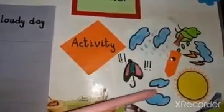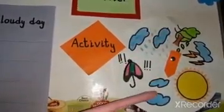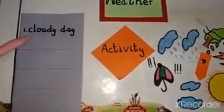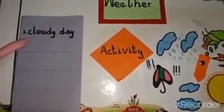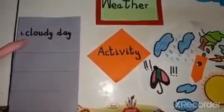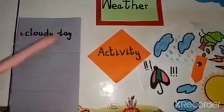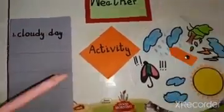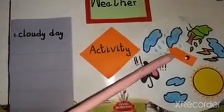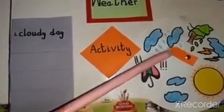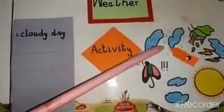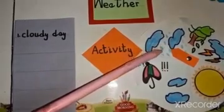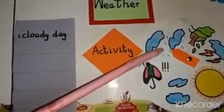You will spin the wheel and see where the arrow comes. Here the arrow comes on cloudy day. On the other page, you will write cloudy day.